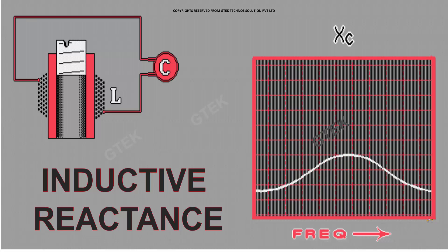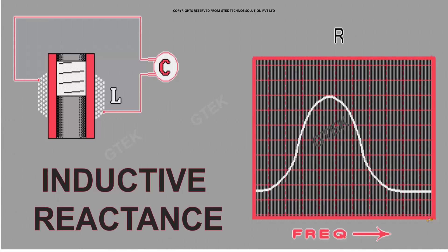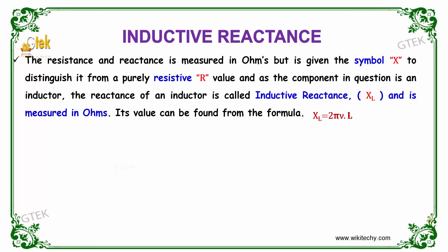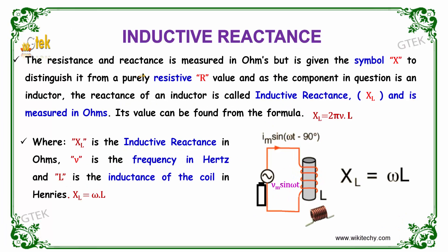Now, let's talk about inductive reactance. The resistance and reactance is measured in ohms but is given the symbol X to distinguish it from a purely resistive R value. And as the component in question is an inductor, the reactance of the inductor is called inductive reactance XL.